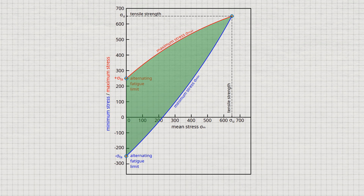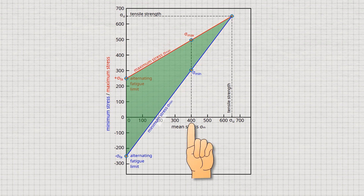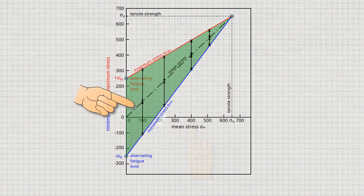For a simplified illustration, the maximum and minimum stress curves can again be approximated by a straight line — the Goodman line — which again results in a kind of safety margin. In this diagram, not only the permissible maximum and minimum stresses can be read off for a given mean stress, but also the maximum permissible stress amplitude. The stress amplitude sigma_A corresponds to half of the difference between maximum and minimum stress. The mean stress results as a straight line symmetrical to the maximum and minimum stresses, shown in the diagram as a dash-dotted line.